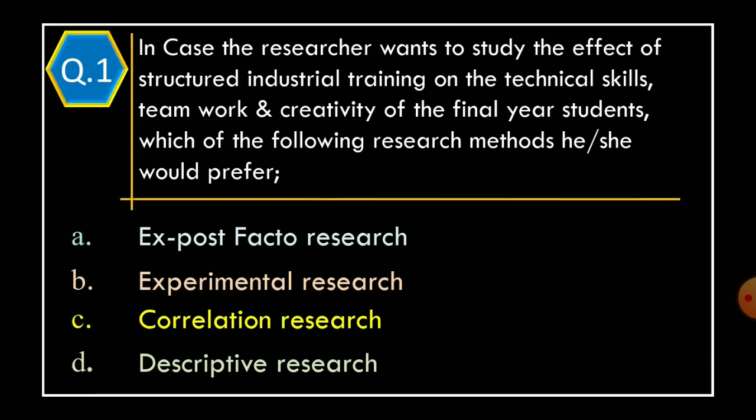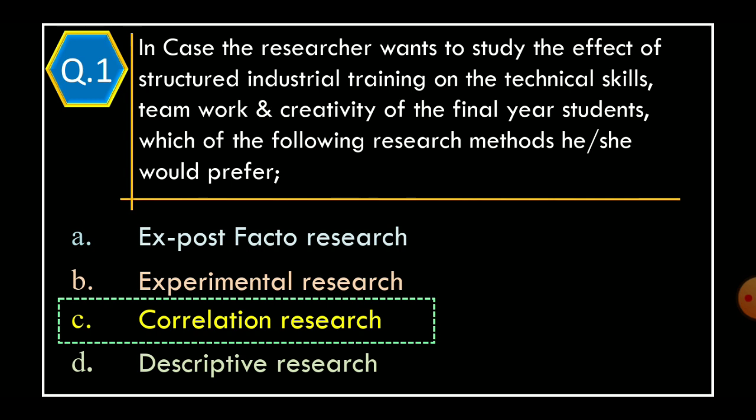Question 1: In case the researcher wants to study the effect of structured industrial training on the technical skills, teamwork and creativity of the final year students, which of the following research methods he or she would prefer? Option A: ex post facto research. Option B: experimental research. Option C: correlation research. Option D: descriptive research. The correct option is Option C, correlation research.